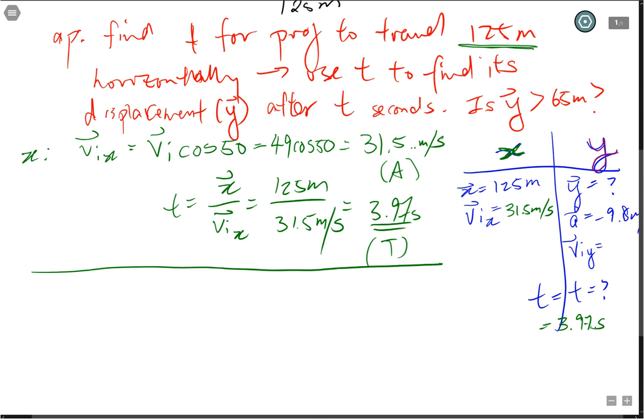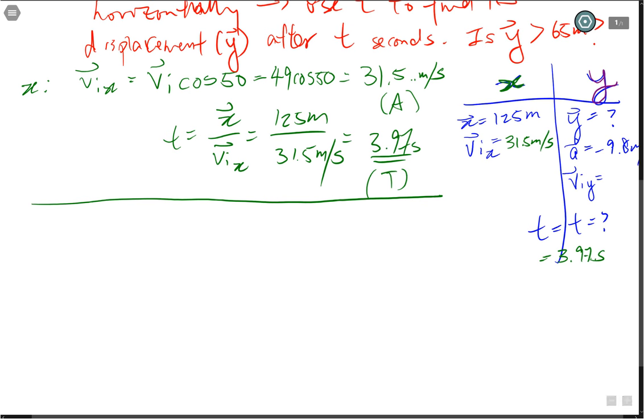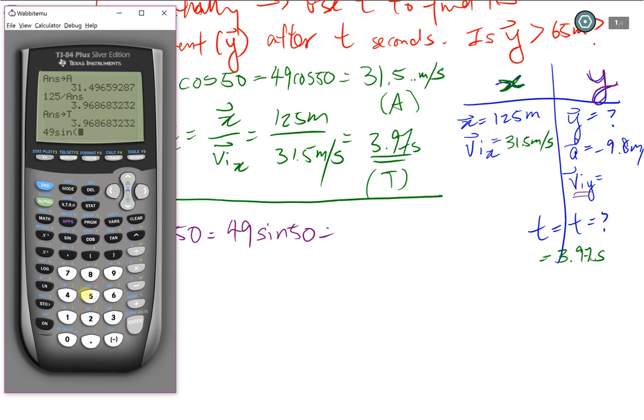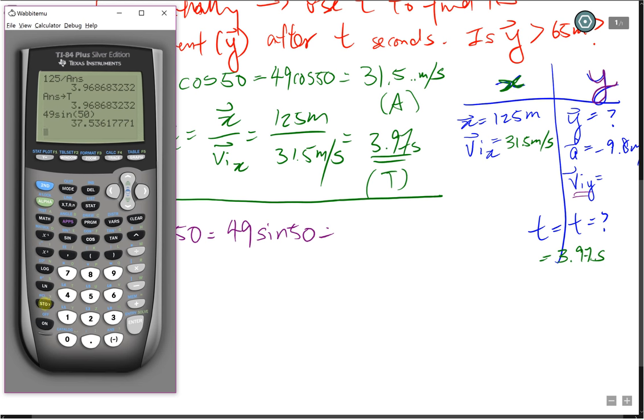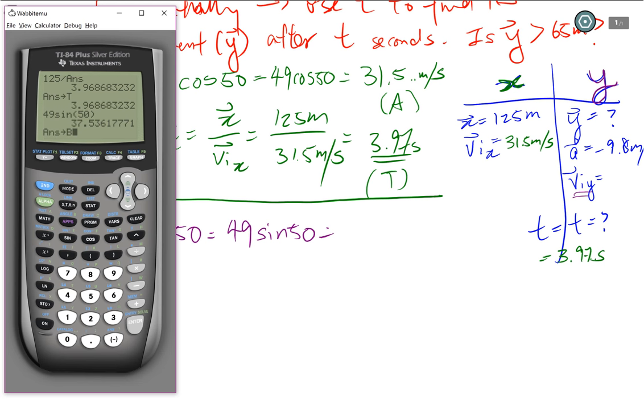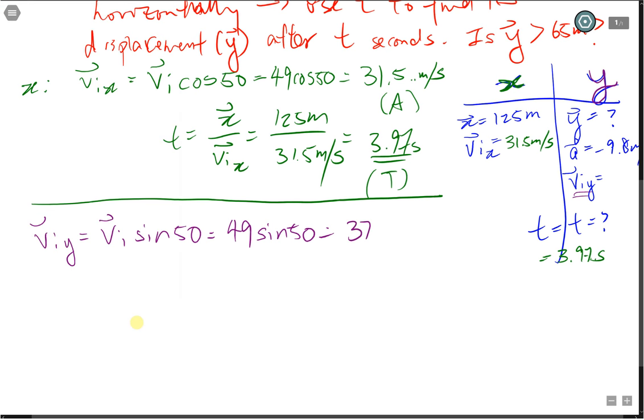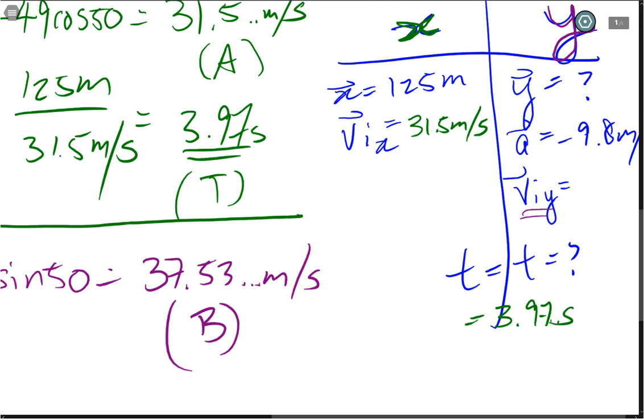Now we have the time. We are going to use our time in our vertical components to find out Y. But before that, we probably need to find Viy. To find our Viy, again, we break our velocity into our components. This is Vi. Instead of cosine, we're going to use sine 50. This is 49 sine 50. On our graphing calculator, this one is 37.53, which I'm going to store as alpha B. 37.53 meters per second, and I stored it as B.